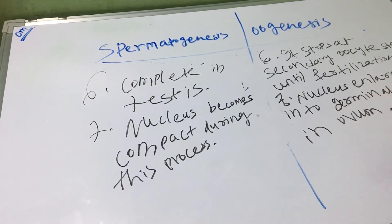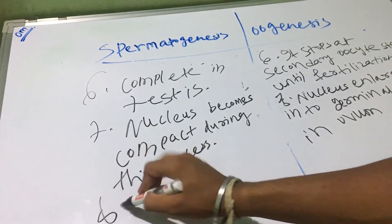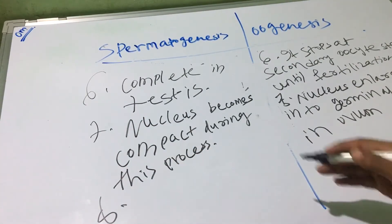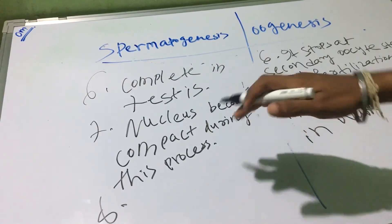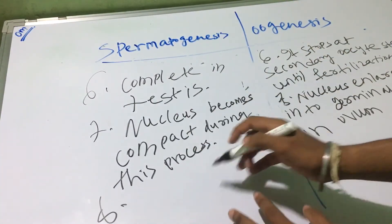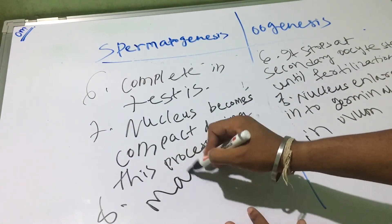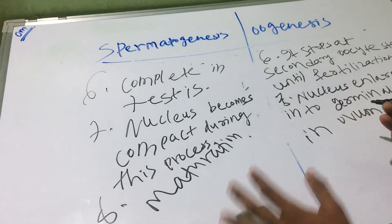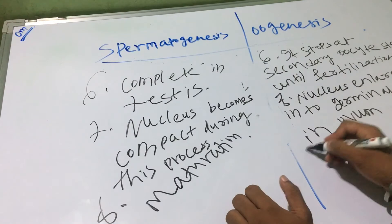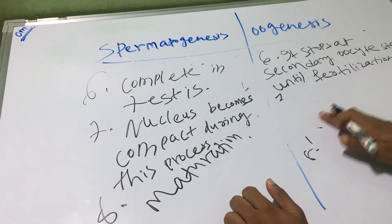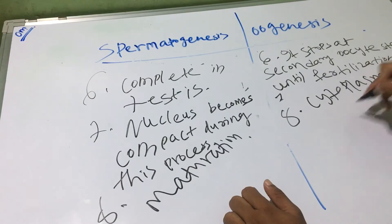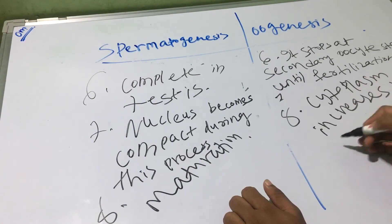The eighth and last point: in spermatogenesis, discarding of a considerable amount of cytoplasm occurs during maturation. And in case of oogenesis, the cytoplasm increases by accumulation of yolk. This is the major difference between spermatogenesis and oogenesis.